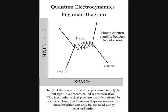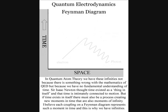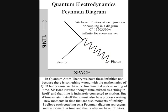I believe we have these infinities not because there is something wrong with the mathematics of quantum electrodynamics, but because we have no fundamental understanding of time. Sir Isaac Newton thought time existed as a thing in itself, and that time is connected to motion.